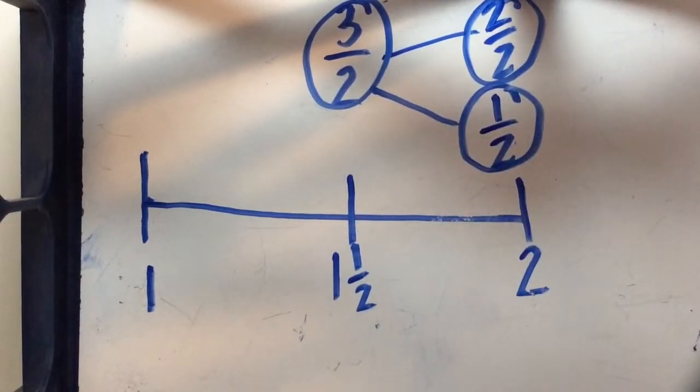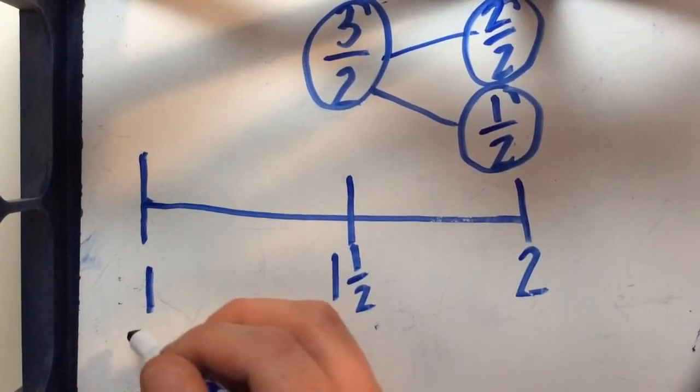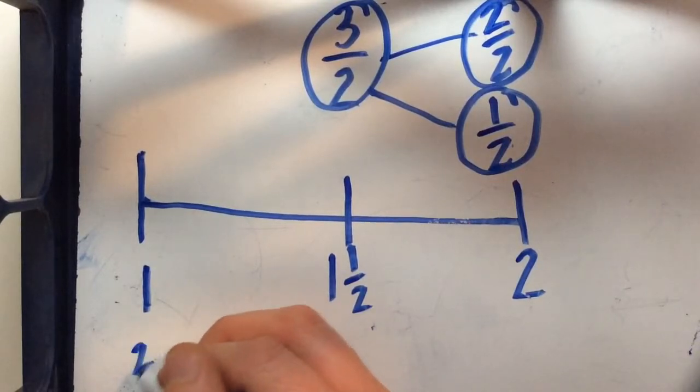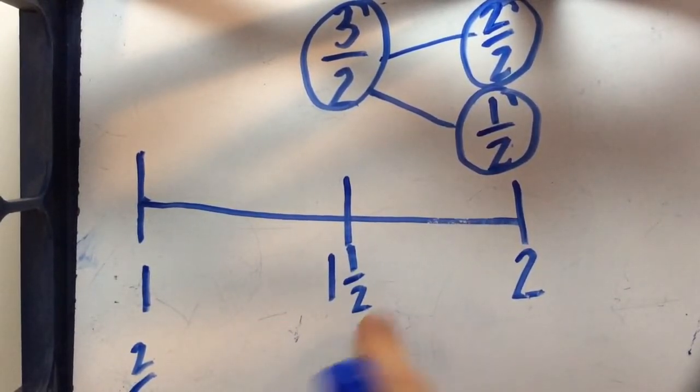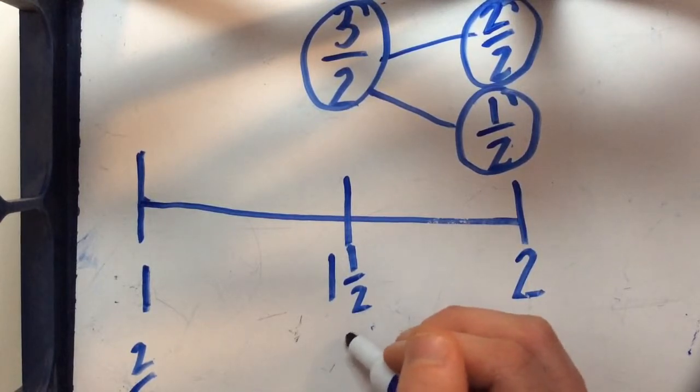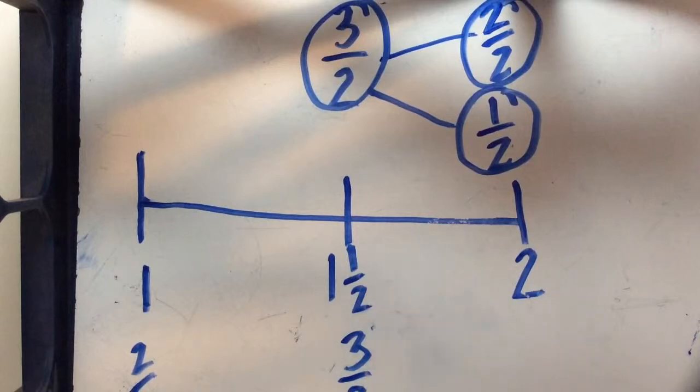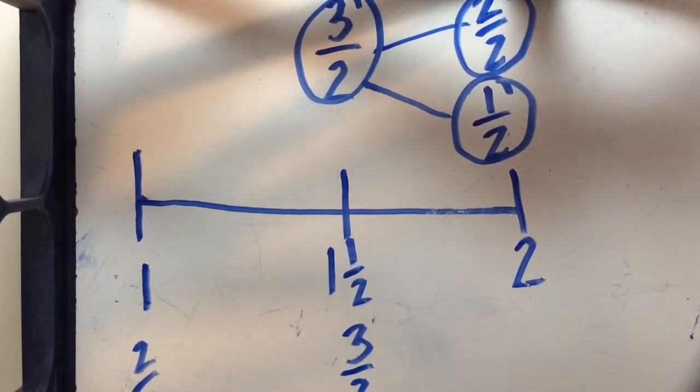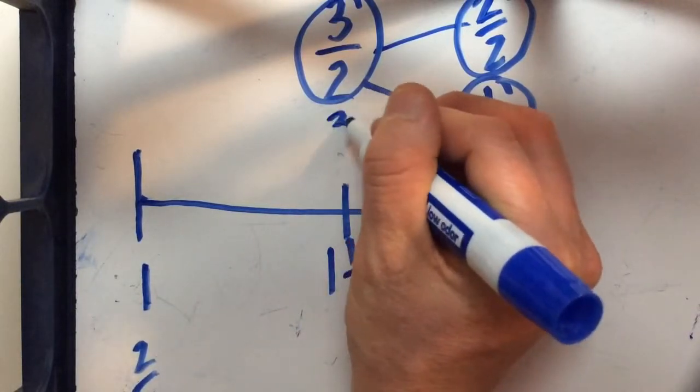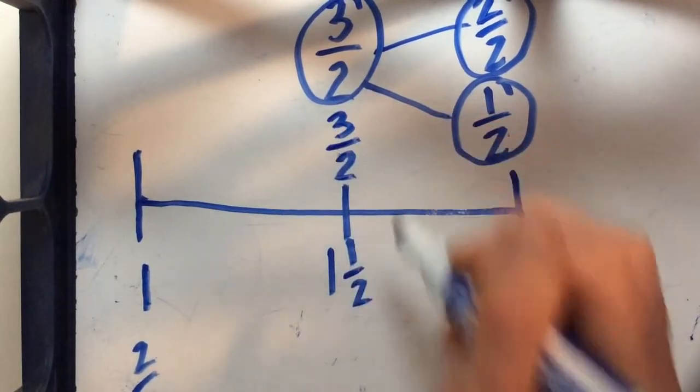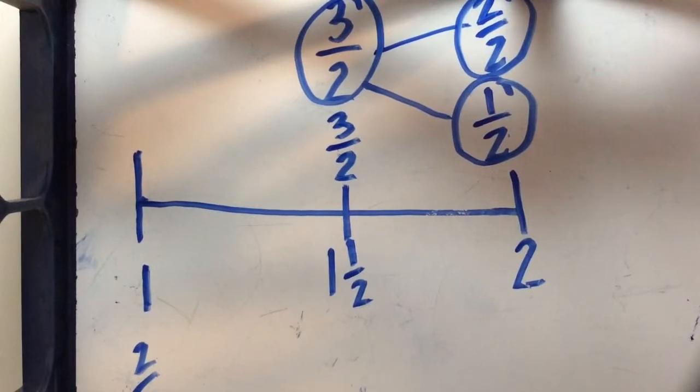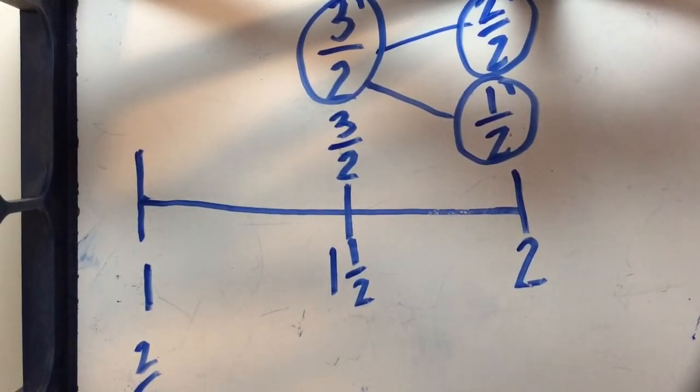So this one should actually be pretty easy to plot because we know that our 2 halves would be right here and an extra 1 half would give us 3 halves. So 3 halves is actually the same as 1 and 1 half. So that one is pretty easy to plot for us on the number line.